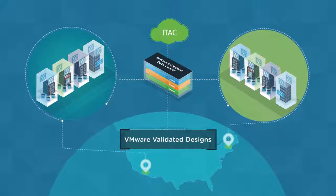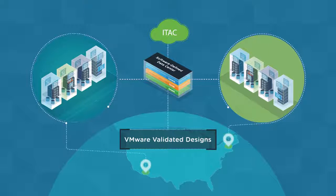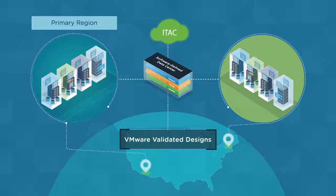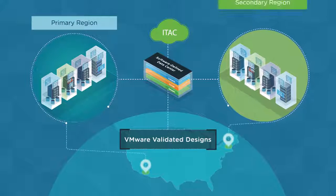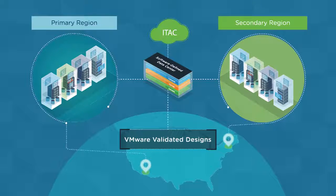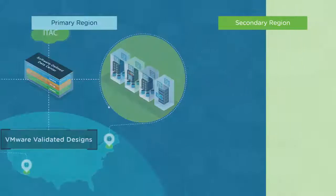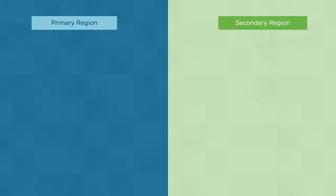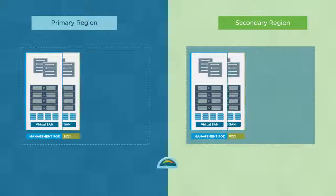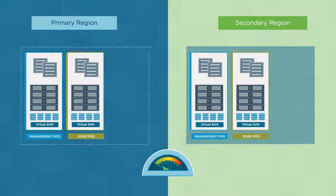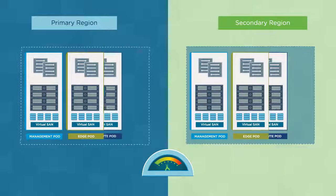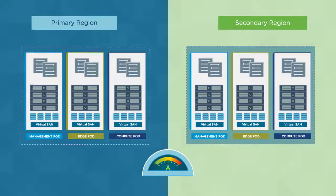In this design, two data centers are deployed in separate regions. One region is designated as the primary and the second as the recovery region. Each region is deployed with a set of management and edge pods alongside compute pods for business workloads.